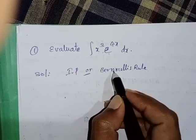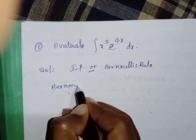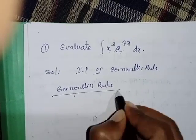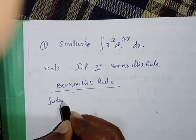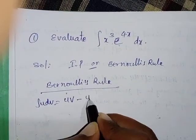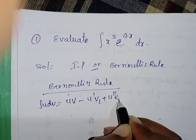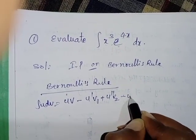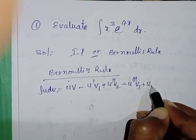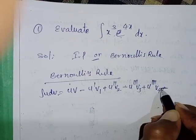It is easy to apply Bernoulli's rule. Bernoulli's rule states: the integral of u dv is equal to u·v minus u'·v1 plus u''·v2 minus u'''·v3 plus u''''·v4 minus, and so on.